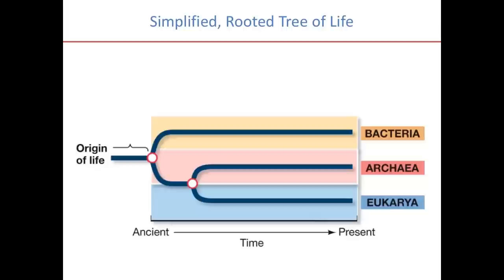Archaea are more closely related to us than they are to bacteria. The way you glean that information from the tree is by looking at the nodes — where branches come together. The nodes show the last common ancestor between two branches. In this particular case, the node represents the last common ancestor between archaea and eukaryotes. That node is more recent than the node between archaea and bacteria.